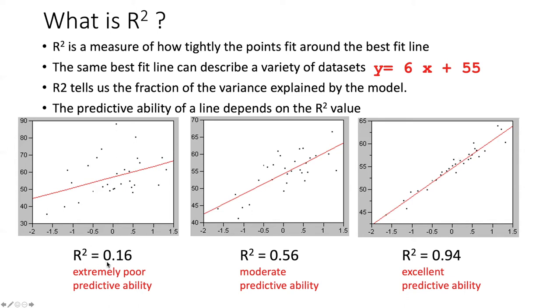The R-squared values for these three lines are, in order, 0.16, 0.56, and 0.94. These numbers represent a scale from 0 to 1, telling us how well the data fit the model.